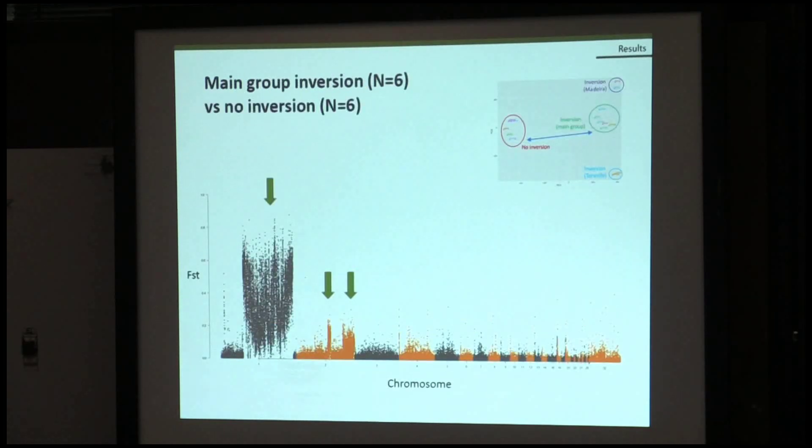So, we realized a comparison among this group, the one without the inversion, and this one, the main group with inversion. And, as you can see in this Manhattan plot, we see a very large region, the same one as in the previous one, that has very large differentiation compared to the rest of the genome. Moreover, we see other regions that could be other structural variants, or they could be under some kind of selection.